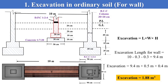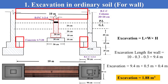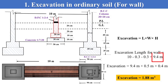To find the wall excavation, first determine the wall excavation length. The spacing between the two columns is 10 meter, so deduct 0.3 meter from each column to get the excavation length, which is 9.4 meter. For the wall excavation, multiply the length of the wall with the width of the wall and the depth from the ground level to the base of the wall foundation.